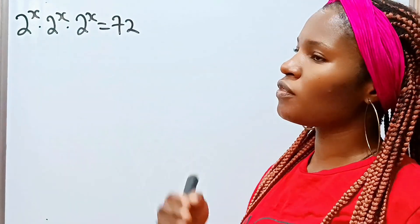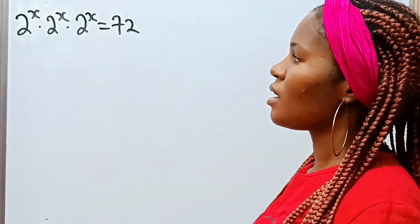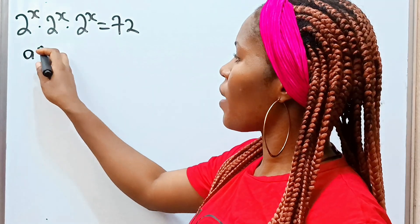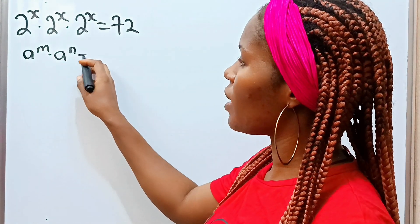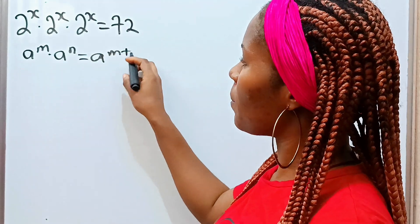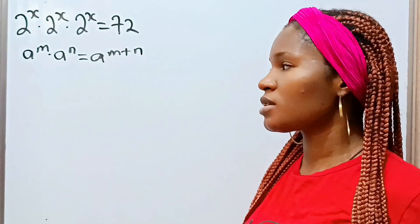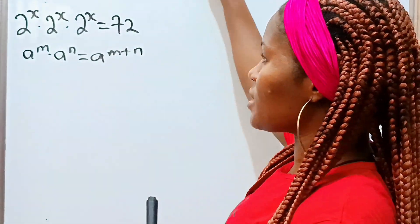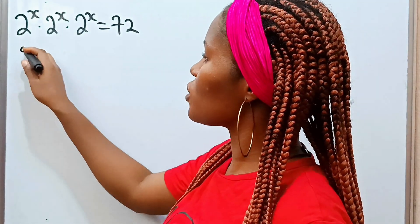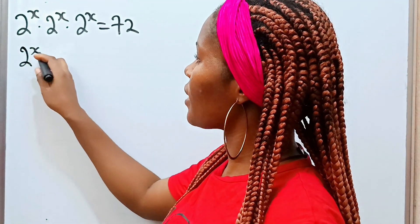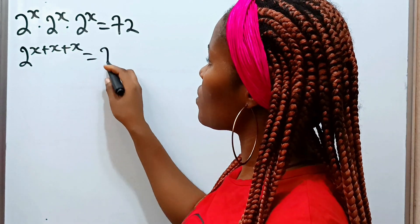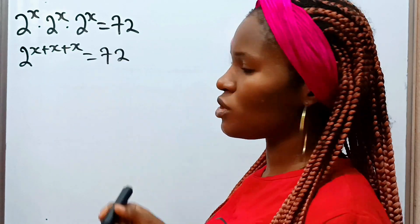Let's solve for the value of x. Remember that when you have a to the power of m multiplied by a to the power of n, that is equal to a to the power of m plus n according to the law of exponents. So that means we can write this as 2 to the power of x plus x plus x, which is equal to 72.